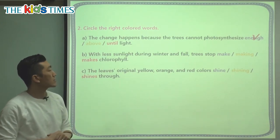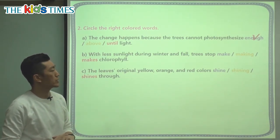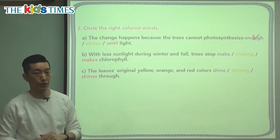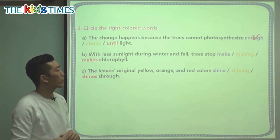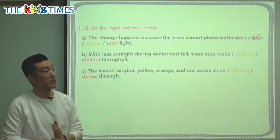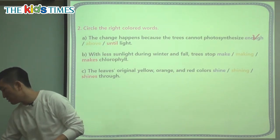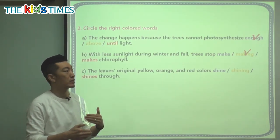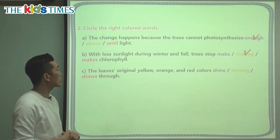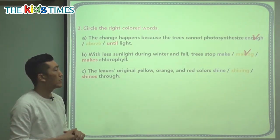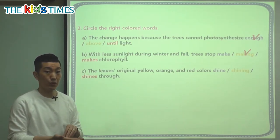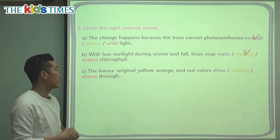With less sunlight during winter and fall, trees stop make / making / makes chlorophyll. Looking at the word before — 'trees stop' — we need an -ing, so the correct answer is 'stop making,' because it's an ongoing process. The trees stop making chlorophyll. No sunlight → they cannot photosynthesize → and if they cannot photosynthesize, they cannot make chlorophyll.